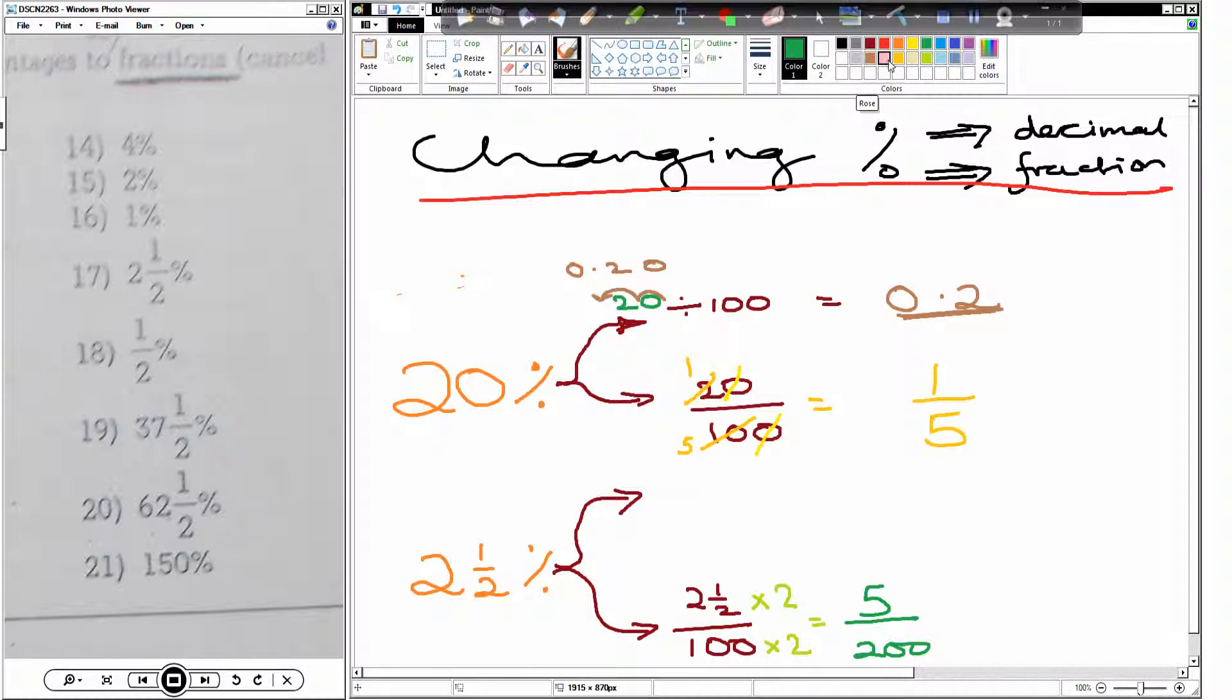So now we need to cancel. What can we cancel them by, Layla? Give me an idea. Five and two and a half, they're both divided by? Five and a hundred are both divided by? Five. So five divided by five is? One. Two hundred divided by five is? Forty. Now it's forty. Okay, we've done that part. A bit more longer, but you've got to put the effort in to do it.